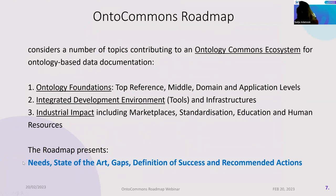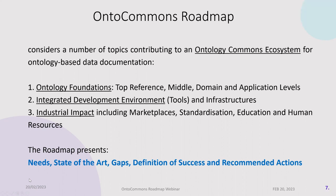This roadmap considers a number of topics related to the ecosystem and ontology-based data documentation. Within the document, these topics are grouped into three main groups: ontology foundations covering different levels of ontologies; integrated development environment including tools for data documentation and ontology development; and infrastructure, plus a third group related to industrial impact including marketplaces, standardization, education, and human resources.